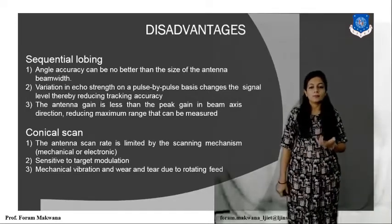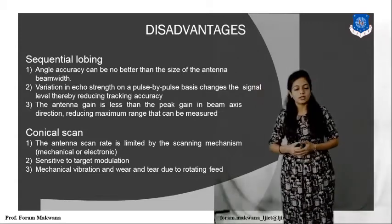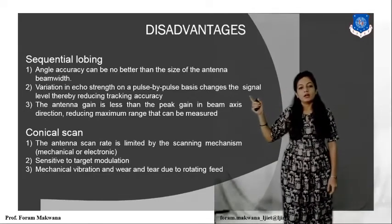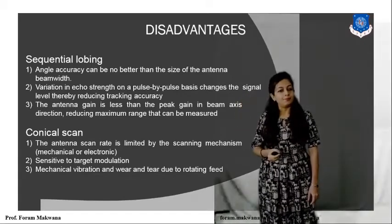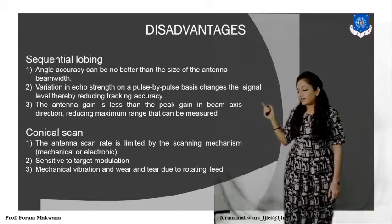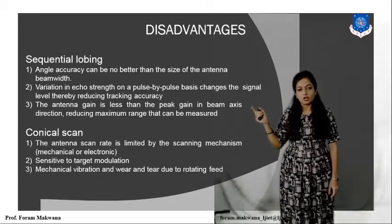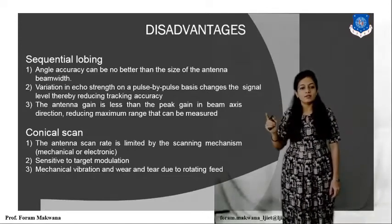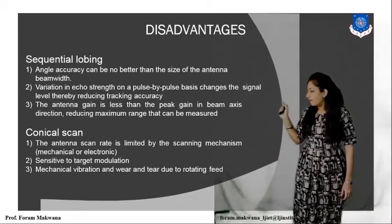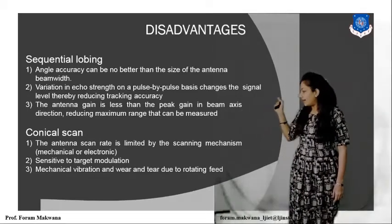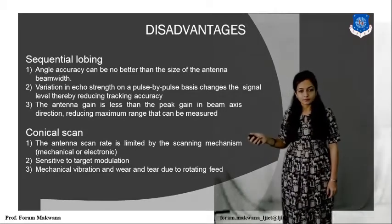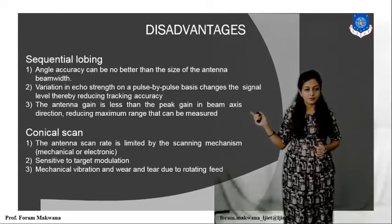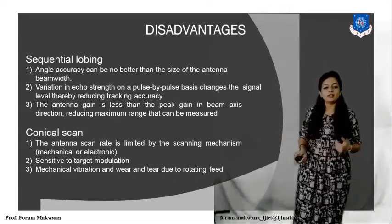The comparison between sequential loading and conical scanning shows that angle accuracy can be no better than the size of the antenna beamwidth. There is a variation in the echo signal on a pulse-by-pulse basis due to basic changes, and the signal level is also changed, which ultimately reduces the accuracy. Third, the antenna gain is less than the peak gain in the boresight axis direction, which reduces the maximum range that can be measured.